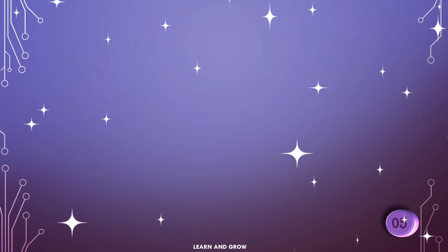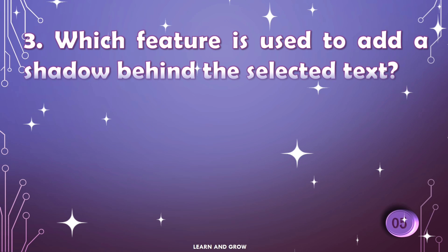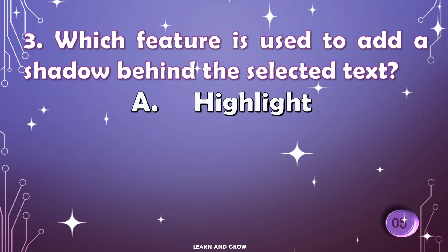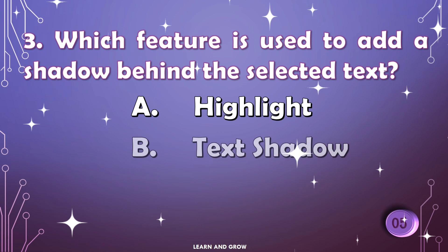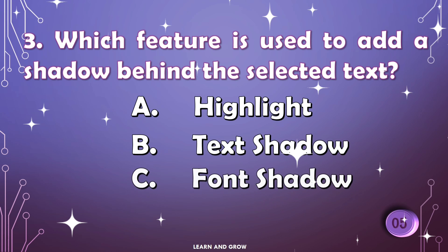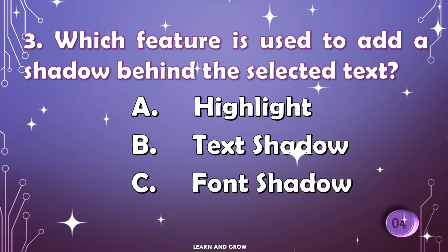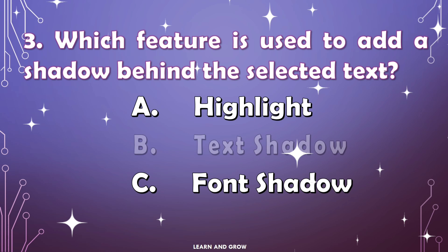Which feature is used to add a shadow behind the selected text? Options are: A) Highlight, B) Text Shadow, or C) Font Shadow. The right answer is option B: Text Shadow.